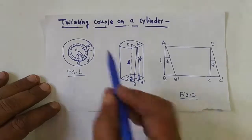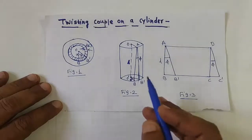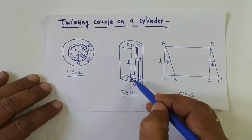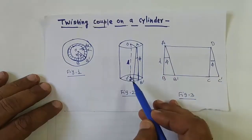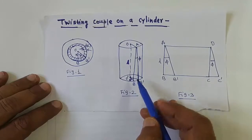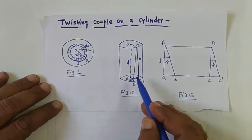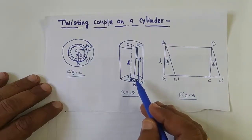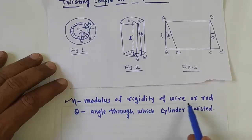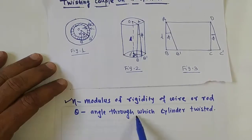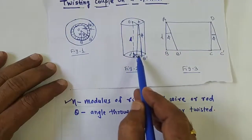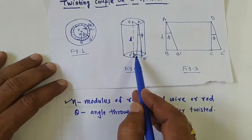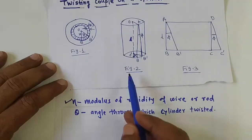We will now study the twisting couple on a cylinder. Consider a cylindrical rod having length L and radius R. Its upper end is clamped and the rod is twisted by applying a couple to its lower end in the plane perpendicular to its length. Then the rod is said to be under torsion. Due to the property of elasticity, a restoring couple equal and opposite to the twisting couple is produced. Let Eta be the modulus of rigidity of the rod or wire, and Theta be the angle through which the cylinder is twisted. The twist produces neither change in length nor in radius of the cylinder.